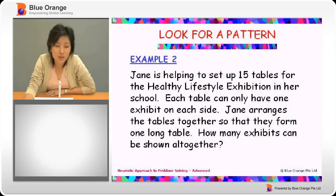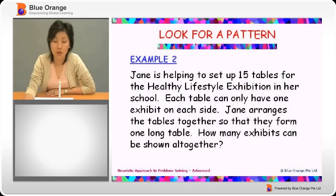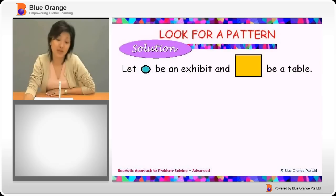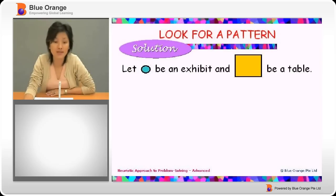In this question, although there are many words here, what we need to do is actually look for a pattern. This is what we can do to get the answer. We use shapes to help us — let a circle be an exhibit and a rectangle be a table.